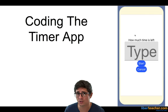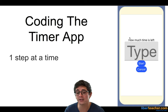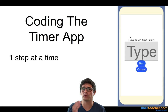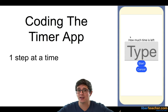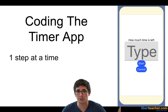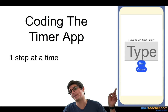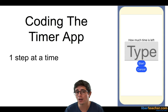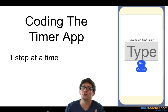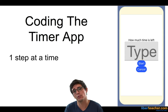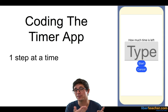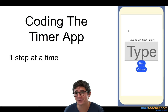The number one thing you should know about building this app or any other app is you should do just one step at a time. That way you can figure out what went wrong. Because if you coded 10 things and then your app isn't working, you have to figure out where in those past 10 steps you made a mistake. Where if you instead did three things and tried it out, you have way fewer options to narrow down where something went wrong. Keep that in mind as you're coding.